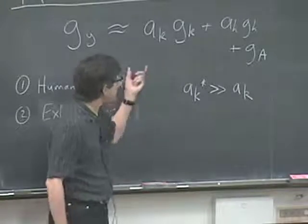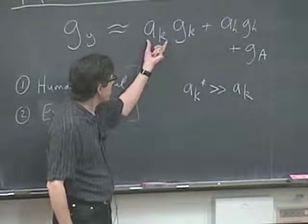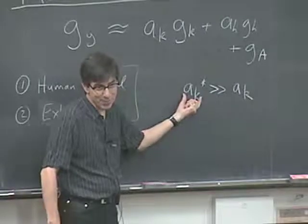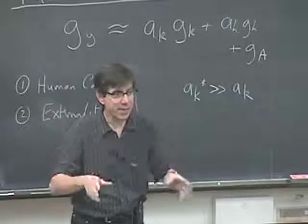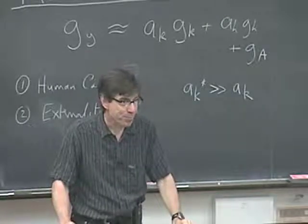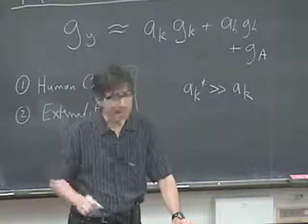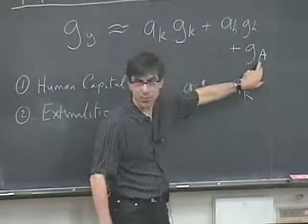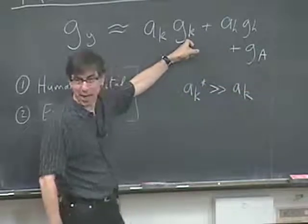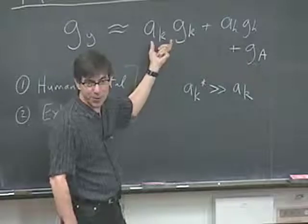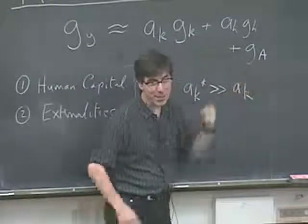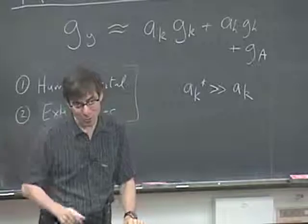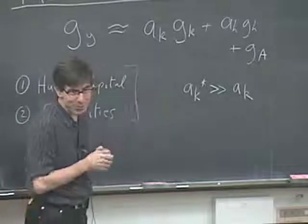The idea is to replace A_K with A*_K, which measures all external benefits from investment in capital. Once we did that calculation correctly, it would explain why there's a correlation between the growth of physical capital and the growth of efficiency. Countries with a lot of capital growth would have a correspondingly bigger mismeasurement of capital's contribution, which would show up in the residual — the efficiency term — and explain why you'd get this correlation.